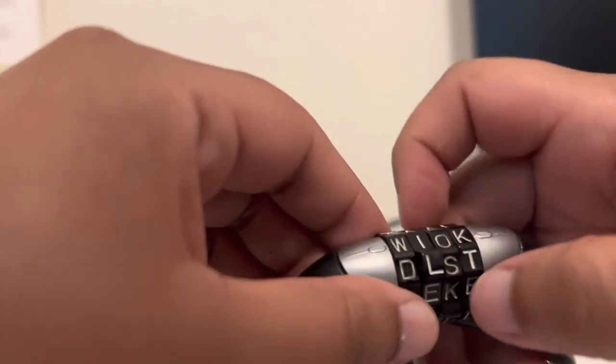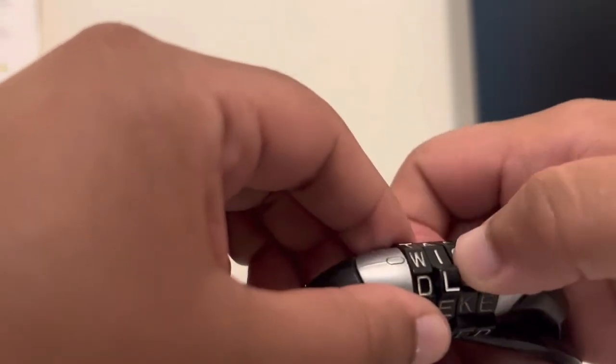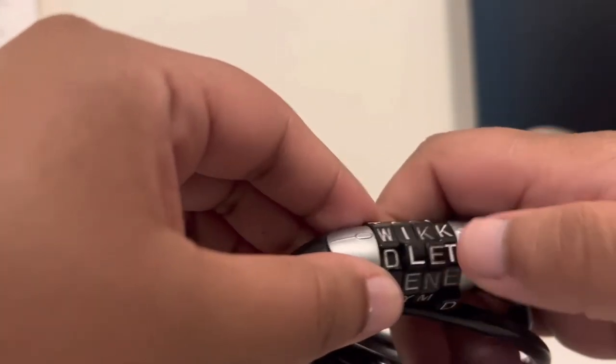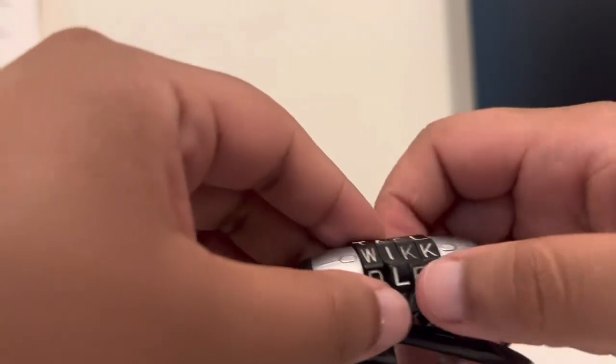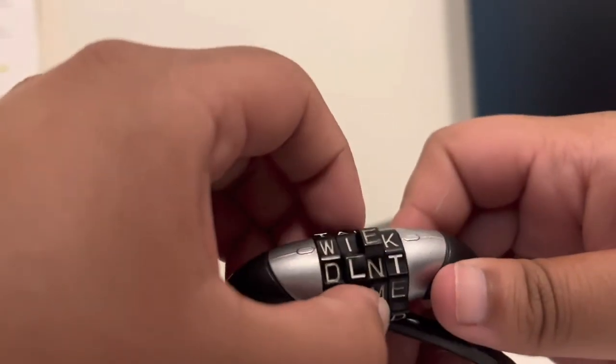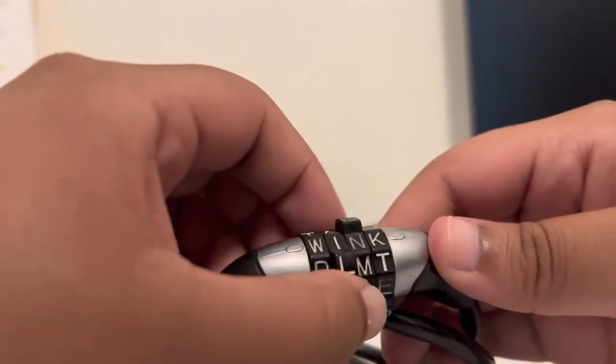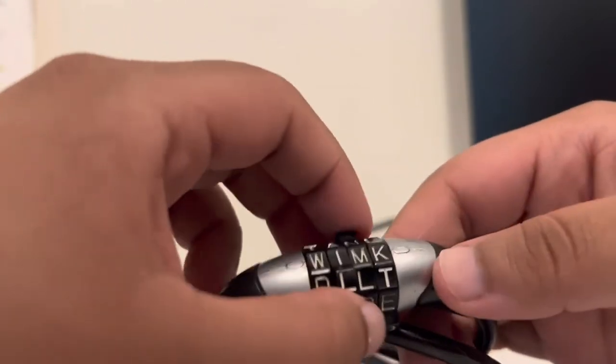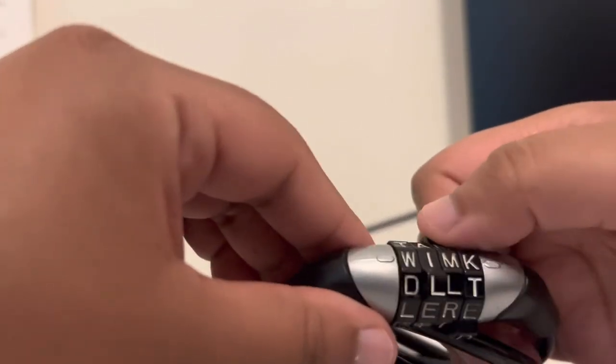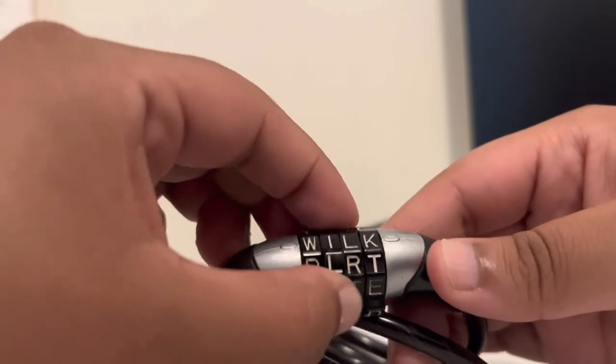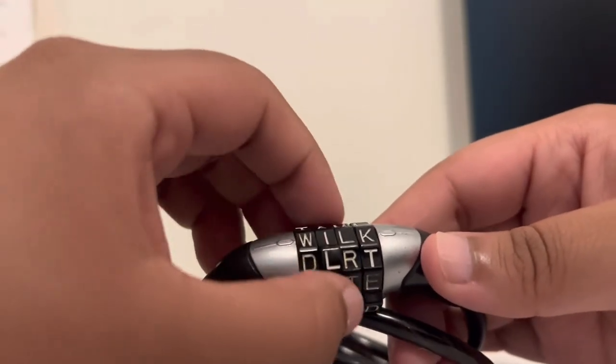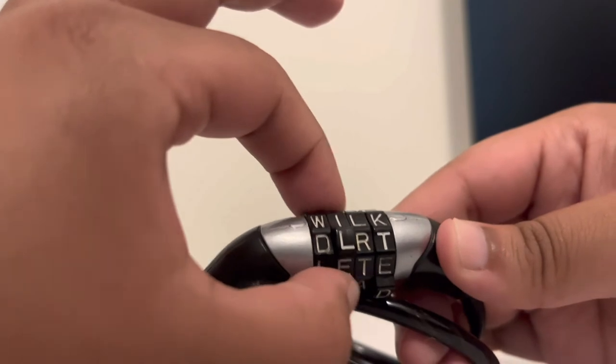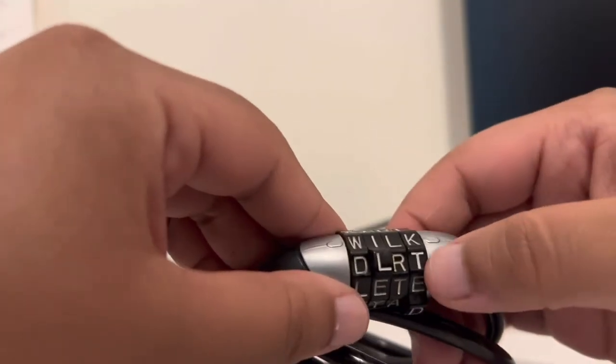This method was the easiest out of all the methods I could find online. Unfortunately, the clicking method did not work for mine since my lock was very rusty and old. I did put some WD-40 on my lock, and that really helped to loosen it up. So if you have an old rusty lock like mine, I would suggest putting some WD-40 on it. Once you get to the third letter, it does get a little bit harder to move.